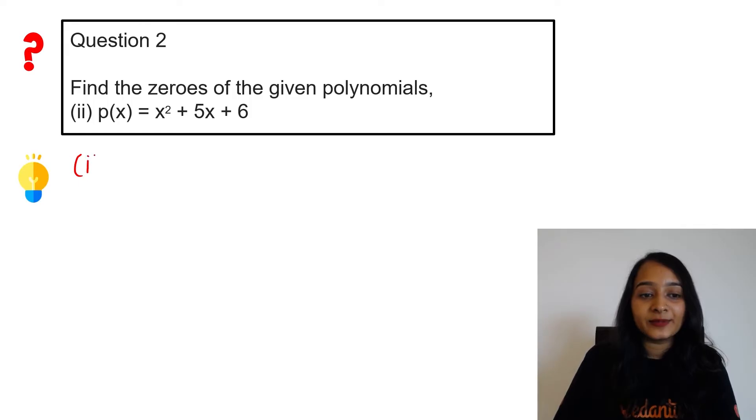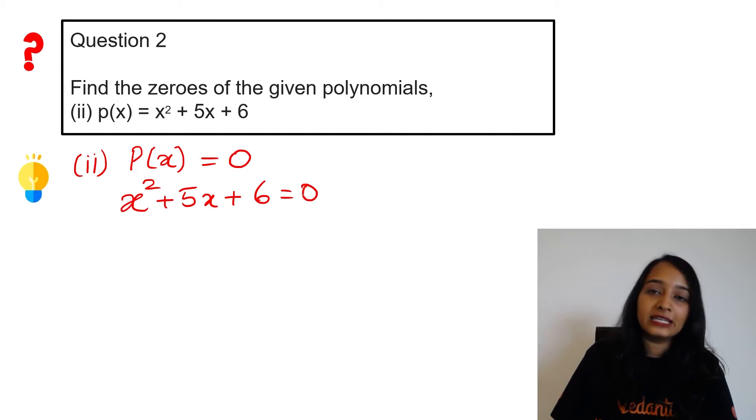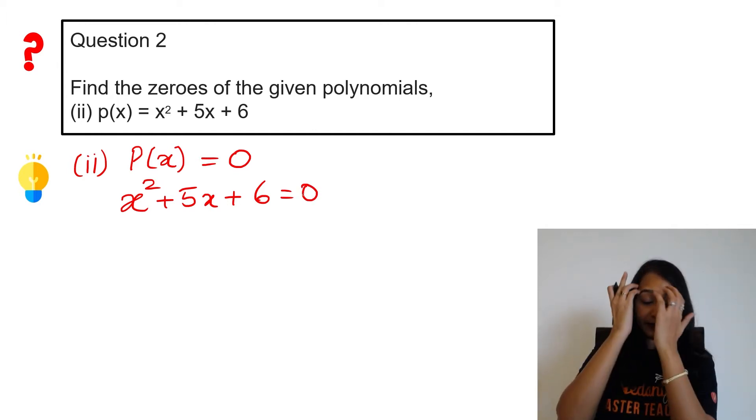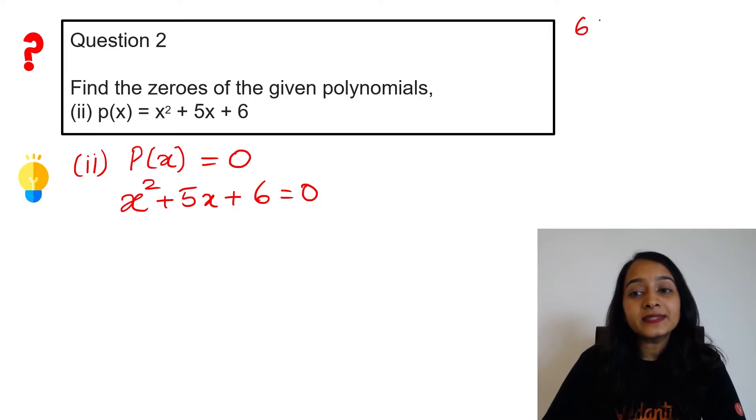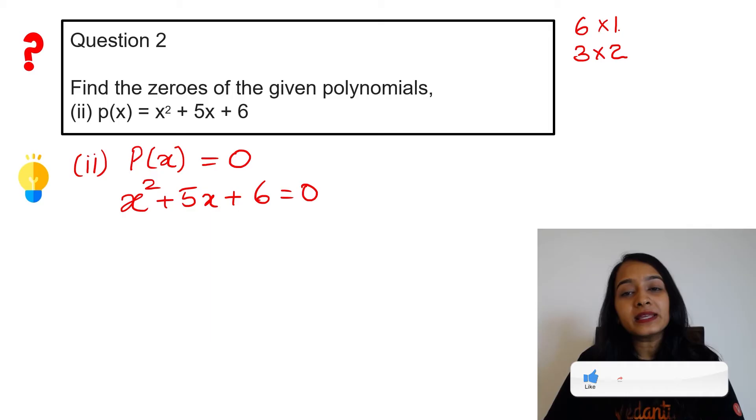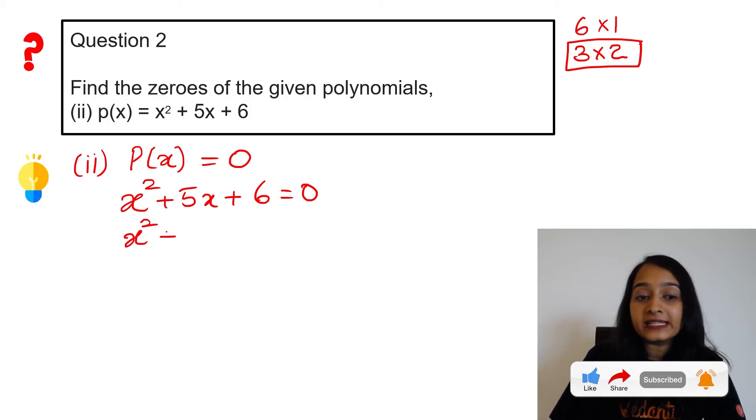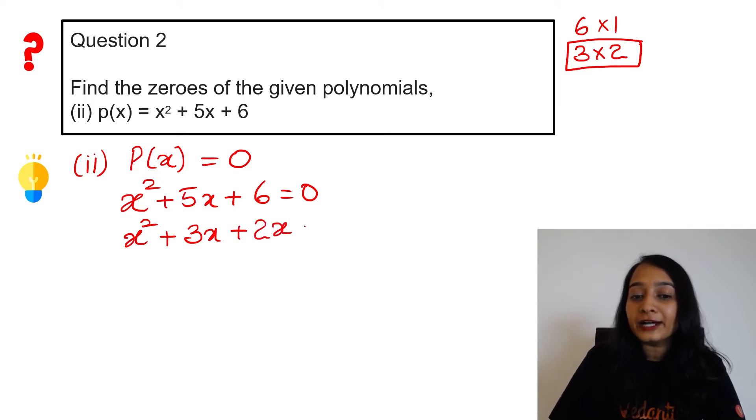Next, this is a quadratic expression. So here your p(x) has to be zero. x² + 5x + 6 = 0. Splitting the middle term. Here constant is 6. 6 we can write as 6 × 1, or 3 × 2. And 6 + 1 is not 5, but 3 + 2 is 5.